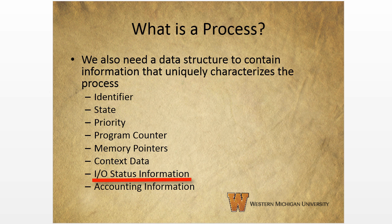Input/output status includes outstanding I/O requests, I/O devices like disk drives assigned to this process, a list of files in use by the process, and so on. Finally, accounting information may include the amount of processor time and clock time used, time limits, account numbers, and so on. When we put all of these together, it gives us our simplified process control block.